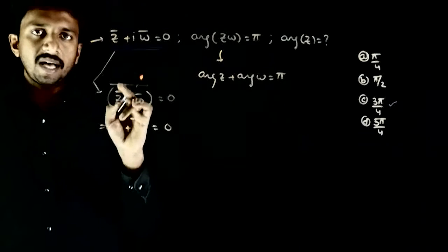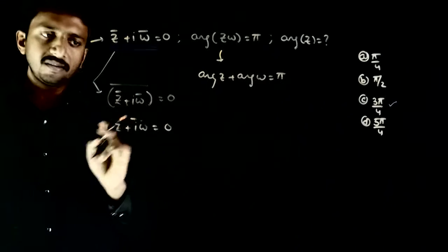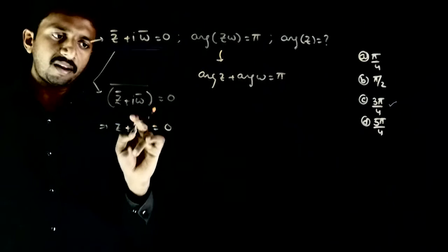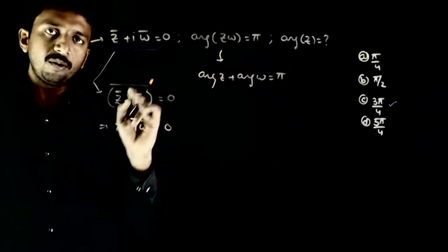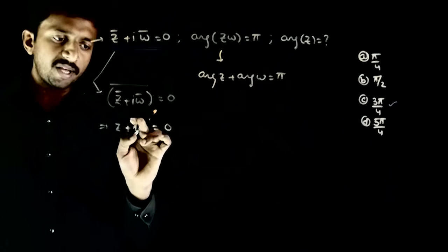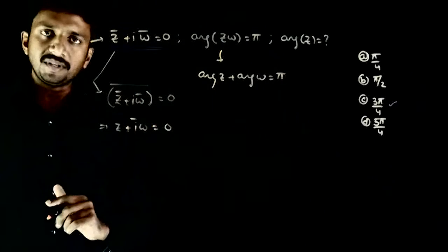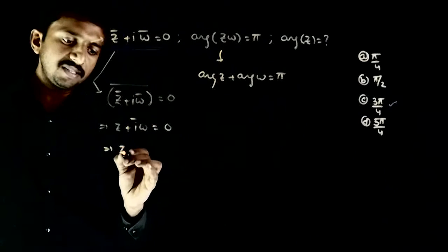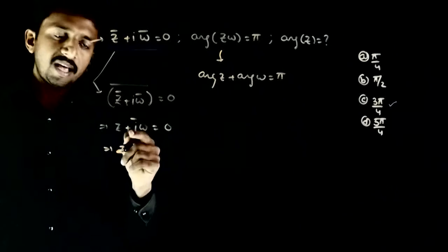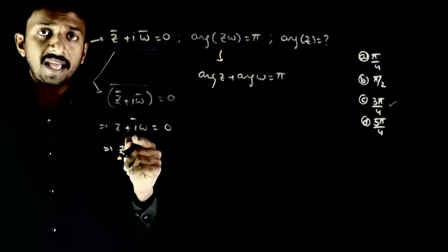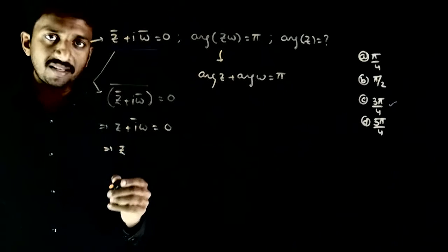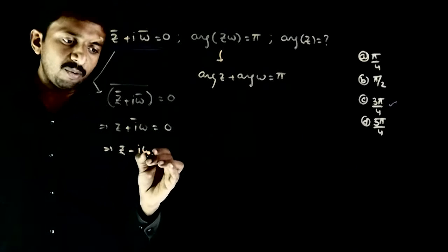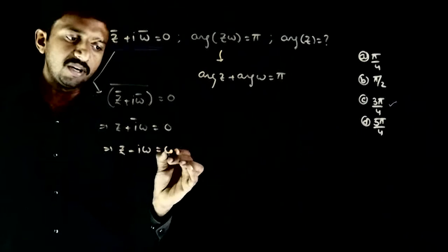z bar whole bar is z, i ka bar is i bar, and omega bar whole bar is omega, is equal to 0. This implies z minus iω is equal to 0.